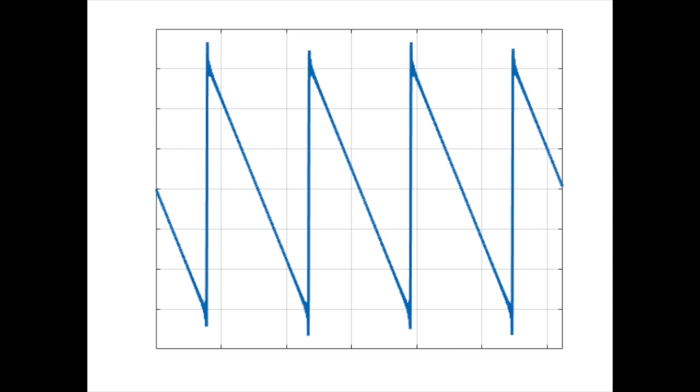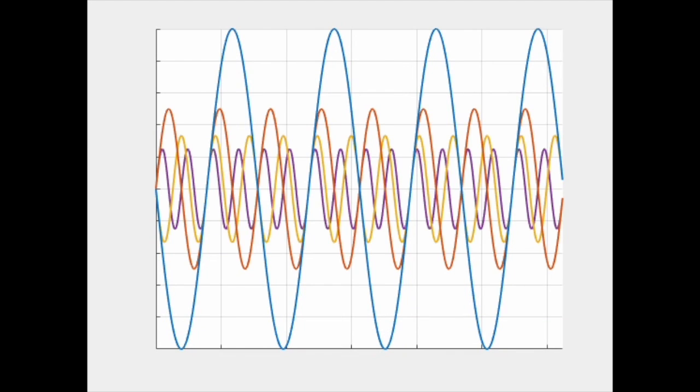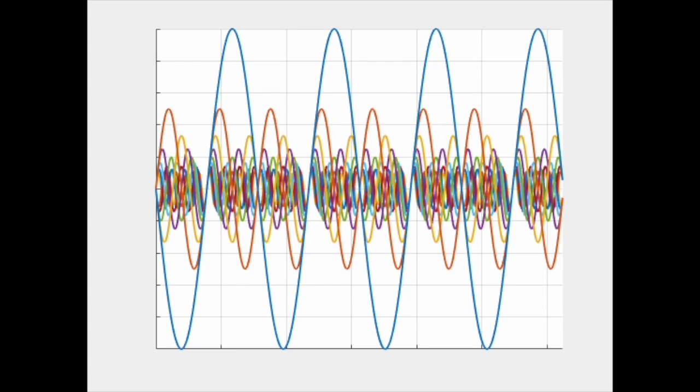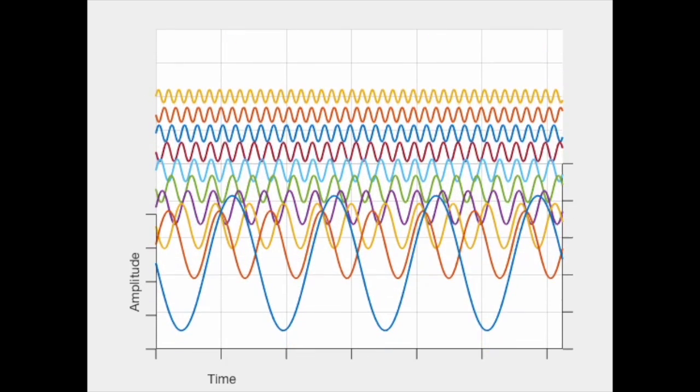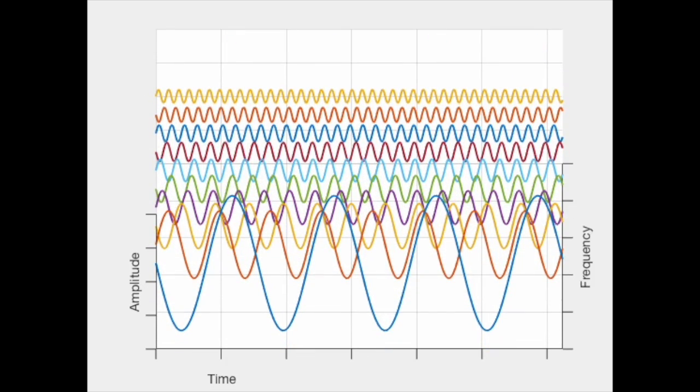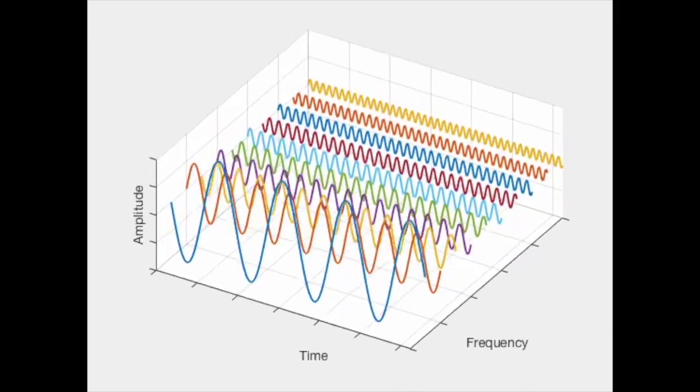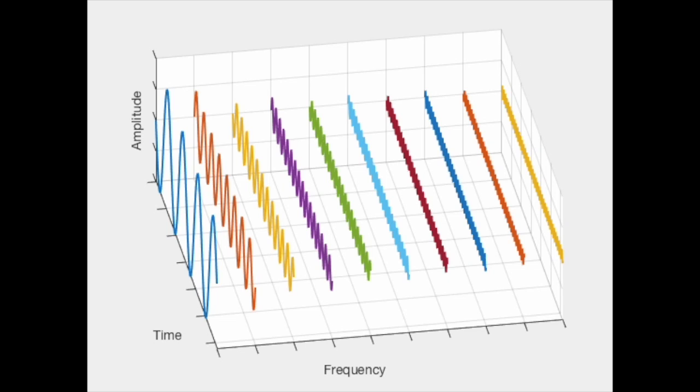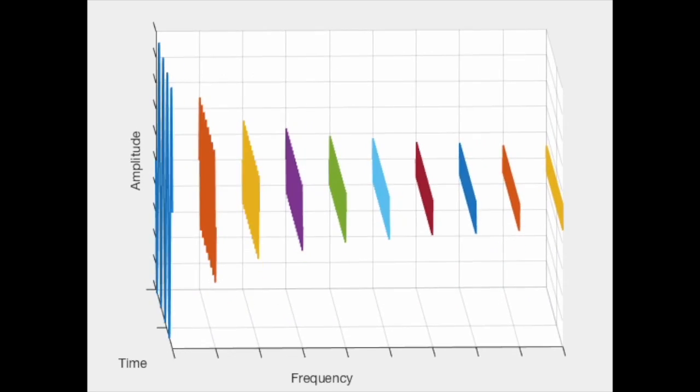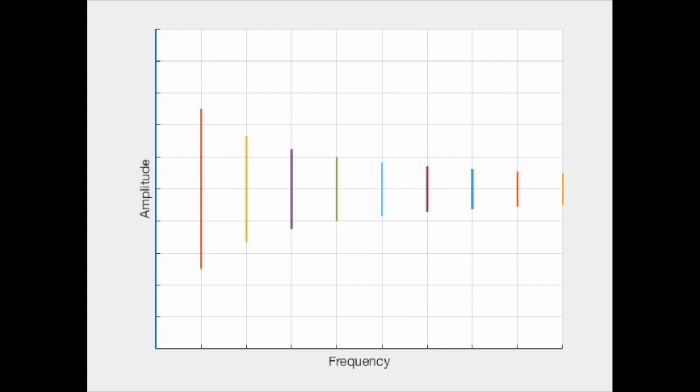Now, what if we want to go the other way? What if we start with the sawtooth wave and want to find the set of sine waves that we need to add together to reconstruct it? This is where Fourier coefficients and Fourier transforms come in. Essentially, a Fourier transform breaks up a signal into a sum of sine waves. Each sine wave is at a different frequency. Instead of looking at the amplitude of a signal as a function of time, we look at it as a function of frequency. In this case, these colored lines are called the Fourier coefficients of the sawtooth wave.